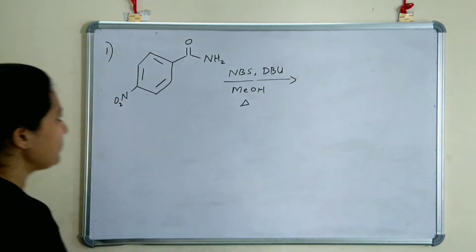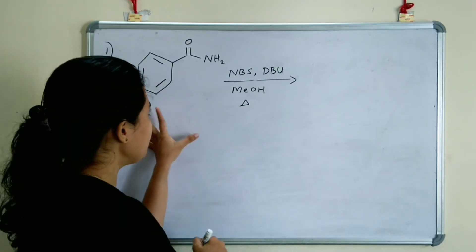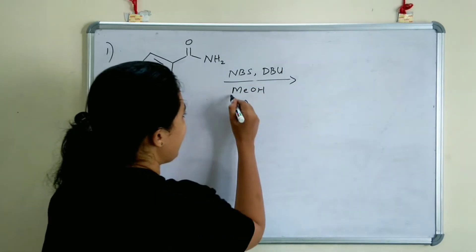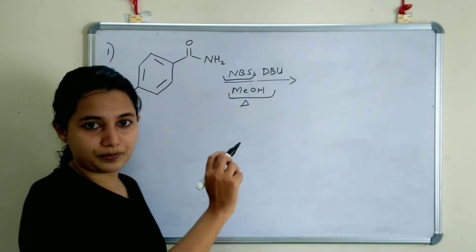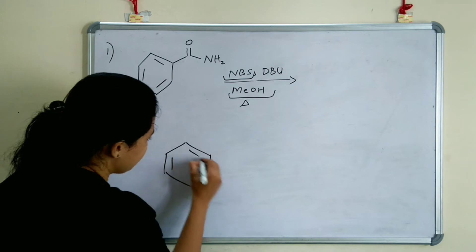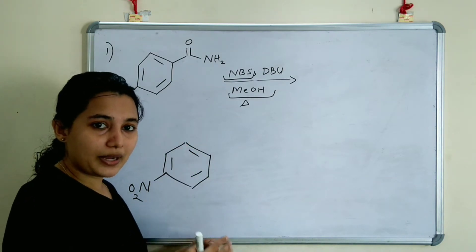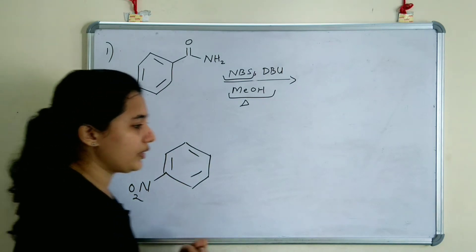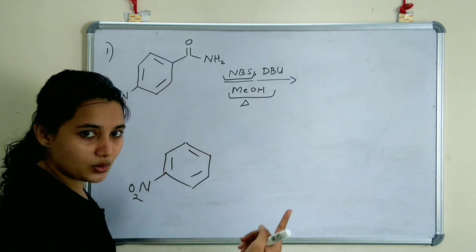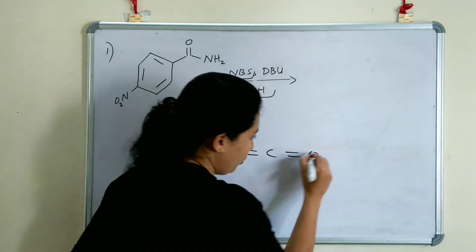Moving on to examples. First: a benzene ring with NO2 and a primary amide (C(=O)NH2) group. We add NBS, DBU, and MeOH. Note that bromine is present in NBS. The primary amide is first converted to an isocyanate (R-N=C=O).